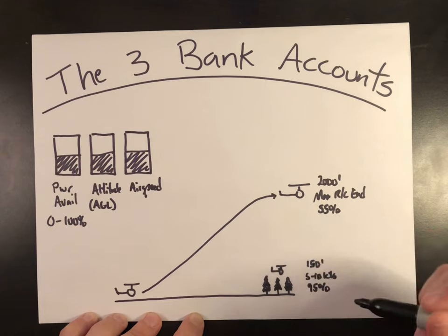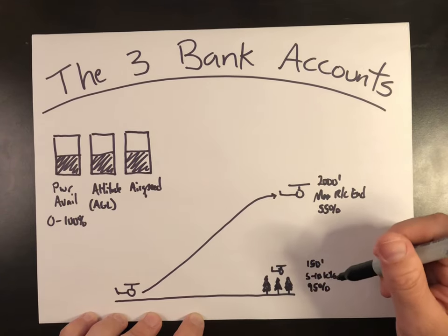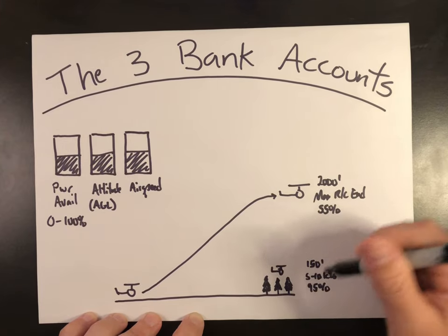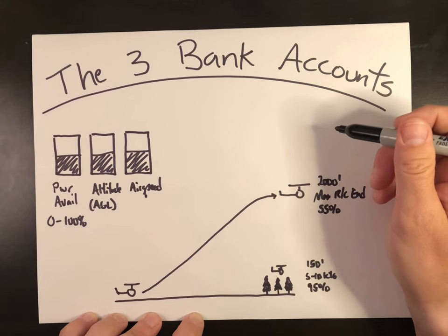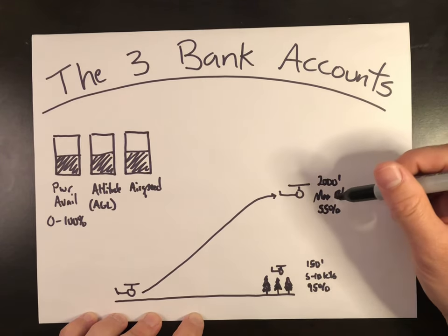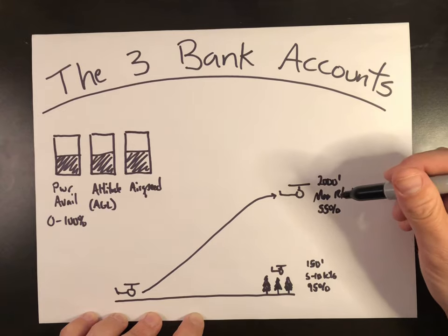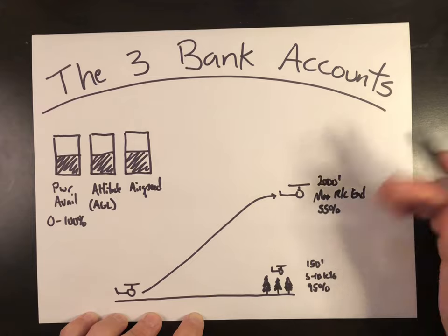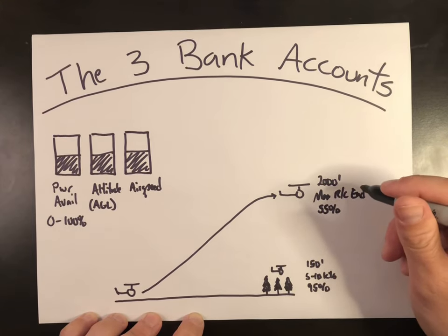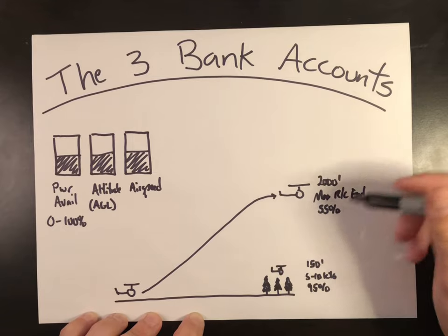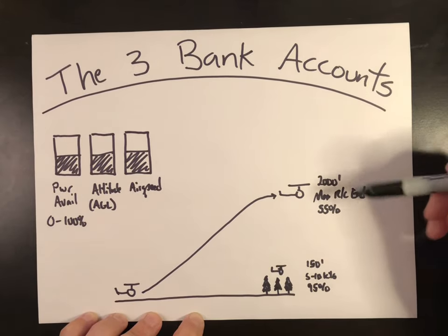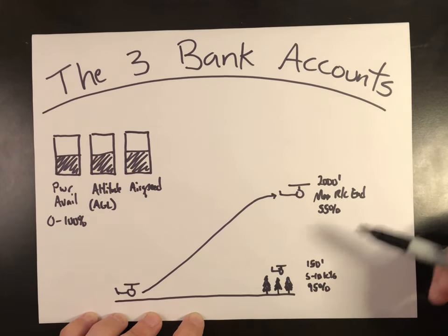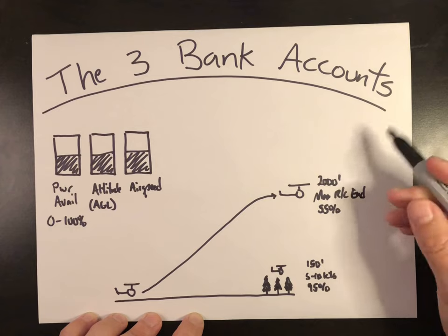Now consider a loss of tail rotor or loss of tail rotor effectiveness. If I'm low and slow, I really have no options. But if I'm higher and faster, the anti-torque required to maintain my heading is lower because higher forward airspeed means the vertical fin offsets the need for the tail rotor. I can also give up altitude to accelerate into forward flight and fly out of a loss of tail rotor condition.